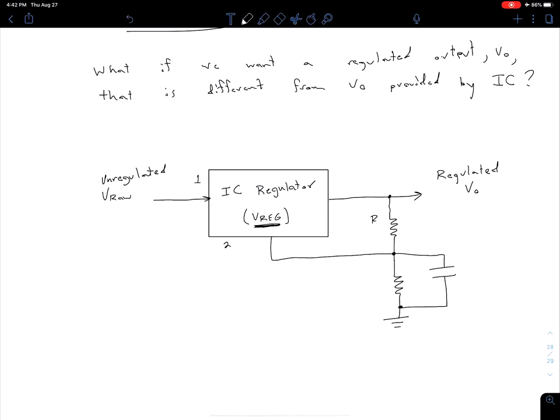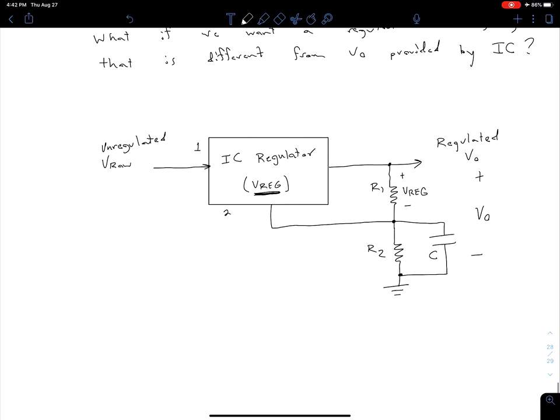Let me label these: R1, R2, and capacitor C. Because pin 2 is still at AC ground, the voltage across R1 is our Vreg, whatever the IC is designed to output. The combination of voltage across R1 and R2 is our output voltage Vout. So we can change this output voltage by creating this simple voltage divider.